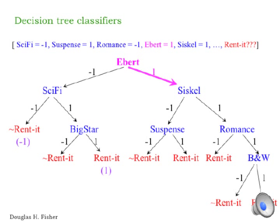The root of the decision tree, Ebert, indicates that we need to look at the Ebert value of the movie that we want to classify. Ebert recommends it, value 1, so we take the right branch of the Ebert node, and that takes us to the Siskel node. Siskel also recommends it, so we take the right branch there.